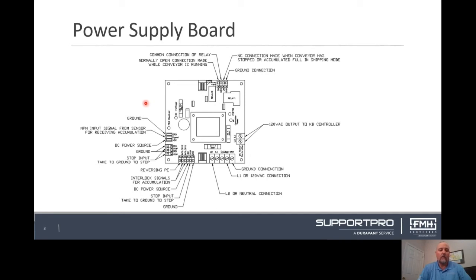There are several lights on this board that will allow you to visibly see the state of the board. The red light is illuminated when a stop signal is being received. This could come from a stop button or a photo-eye package stop if equipped.